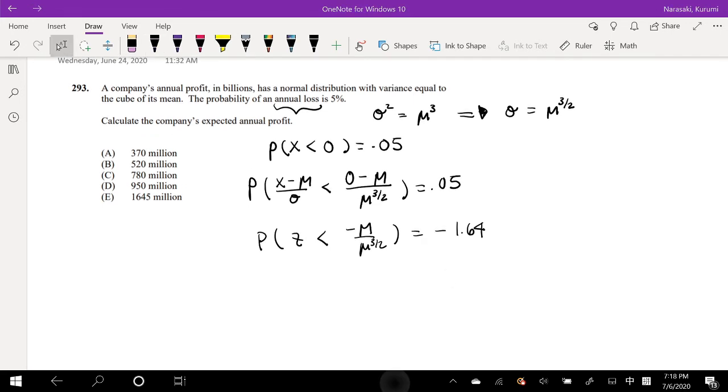I feel like I always see right right a lot, but that's just my habit. Sorry about that. So then this is just equal to Z is less than negative mu, this is technically 2 over 2. So then that's equal to mu to the negative 1.5 is equal to negative 1.64.